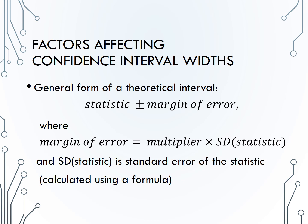The general form of a confidence interval is to take a statistic plus or minus a margin of error, where the margin of error is found by taking a multiplier determined by the confidence level times the standard deviation of a statistic. The standard deviation of the statistic is calculated using the standard error formula.